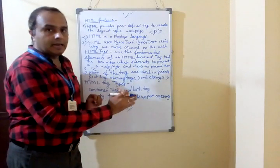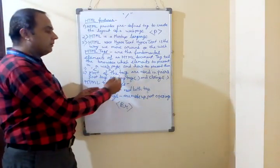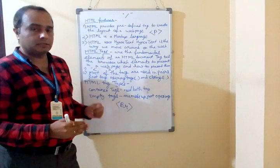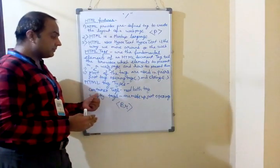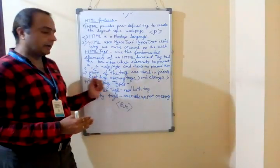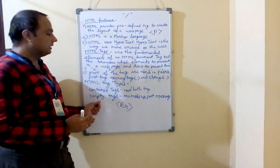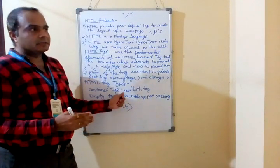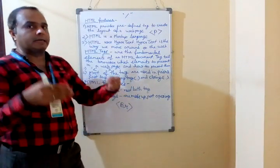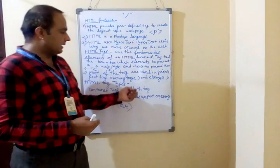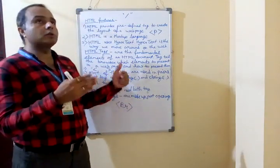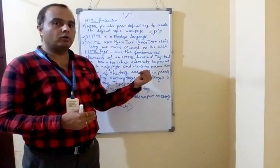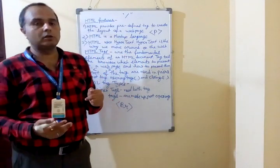There are two types of HTML tags. The first one is the container tag and the second one is the empty tag. A container tag means it contains both an opening tag and a closing tag.